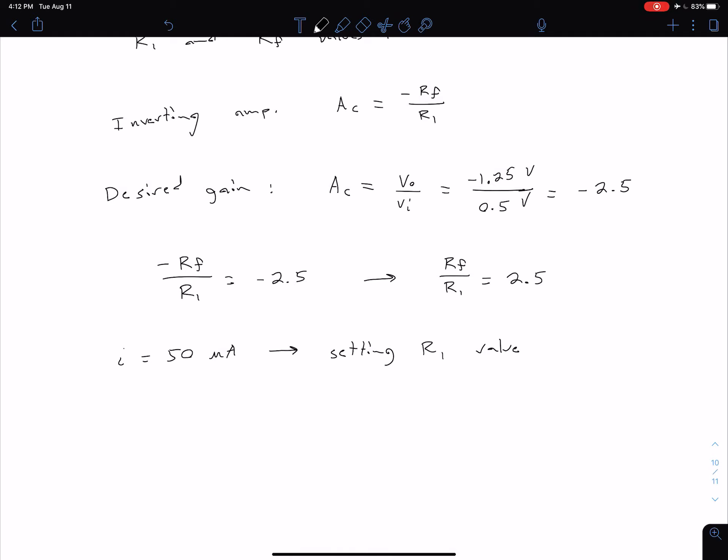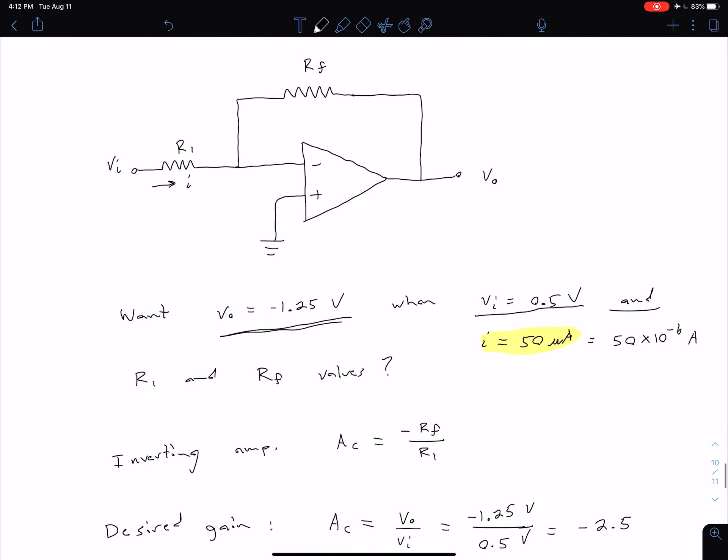And so we can see why that is, because our V input is equal to I times R1. So let me go back up to our circuit to see that more clearly.